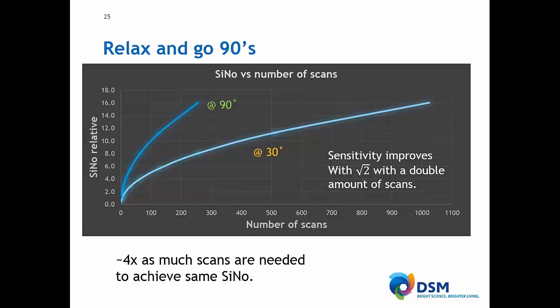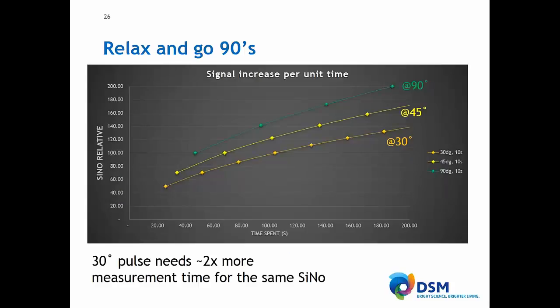But we're not interested in how many scans we need — we're interested in how much time we need to spend. If we plot that, you can see that with a 30 degree pulse you start with only half the signal-to-noise that you would have with a 90 degree pulse, and you will need almost two times as much time to get to the same level of signal-to-noise. The same goes for pulses in between, coming to 45 degrees or 60 degrees — 90 degrees gives the best results.